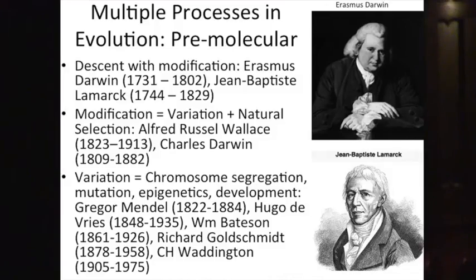The first really scientific ideas about the nature of that modification came from Alfred Russell Wallace and Charles Darwin, 50 years later in the middle of the 19th century. They were first presented at a meeting of the Linnaean Society in 1858. Darwin was there; Wallace was in the jungles of Malaysia collecting butterflies and other exotic beasts.